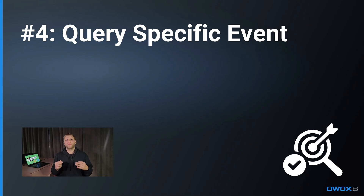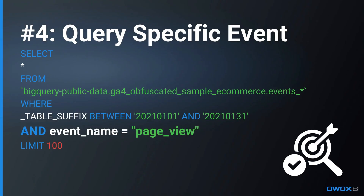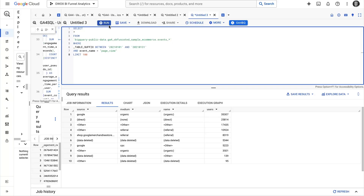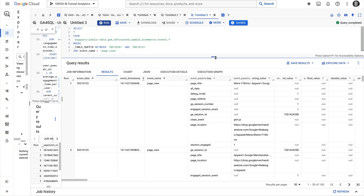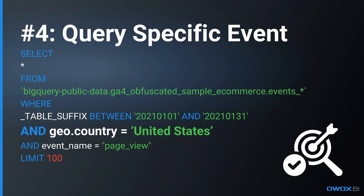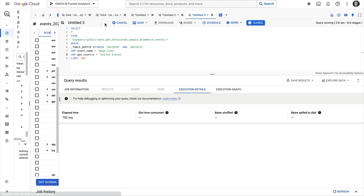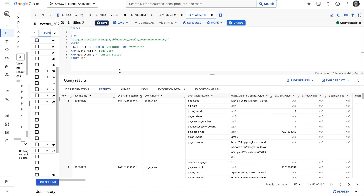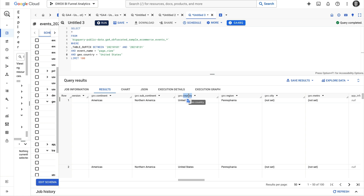Now you might want to query specific event data. Let's say you want to retrieve some specific data about page view events. We're going to use the WHERE clause here. We'll select star — meaning all columns from our table — where event_name equals 'page_view'. It returns the first hundred rows and all the columns where the event name equals page view. You might also want to filter the data by country — for example, United States. We add AND geo.country = 'United States' to our WHERE clause. We'll see all the data for a hundred rows and all columns where the event name is page view and the location is United States.